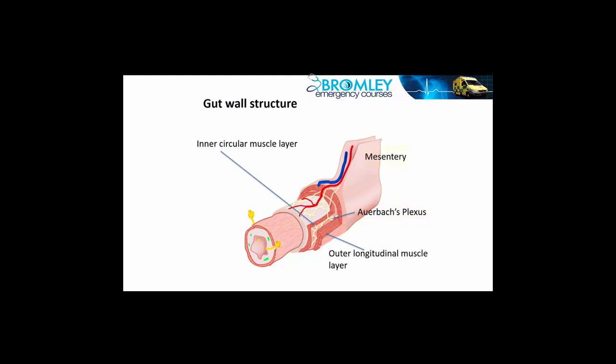The gut is suspended by mesentery from the abdominal wall, and within the mesentery runs the arterial and venous supply, and the nerves also pass along the mesentery. The enteric nerves have a great deal of automaticity — there are a number of ganglia within the neural plexi, and in total it operates independent of central nervous system input, functioning quite independently in controlling gut activity and movement. It's often referred to as the enteric nervous system, though overall control by the central nervous system is important.